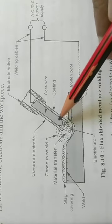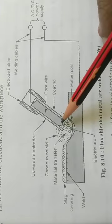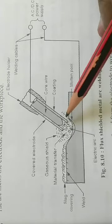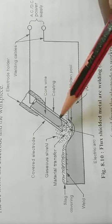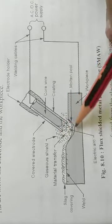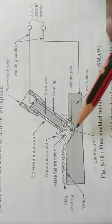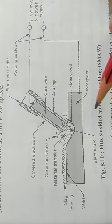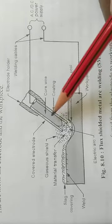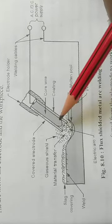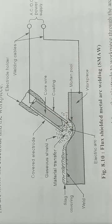The flux performs the functions of arc stability and weld metal protection, that is weld shielding. The electrode itself melts and supplies the necessary filler metal.